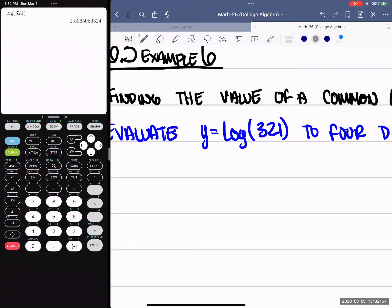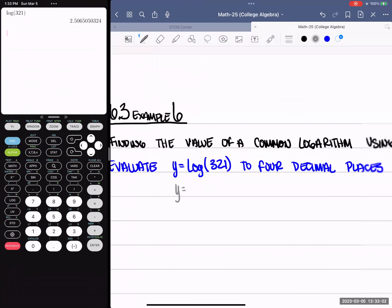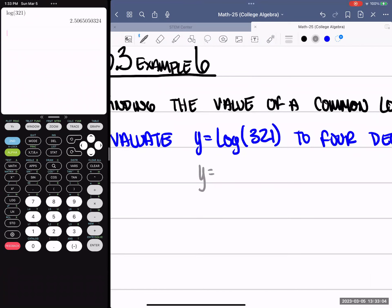There isn't any other way that we could find that solution, and that's why logs were invented. We're going out four decimal places, so 2.5065.